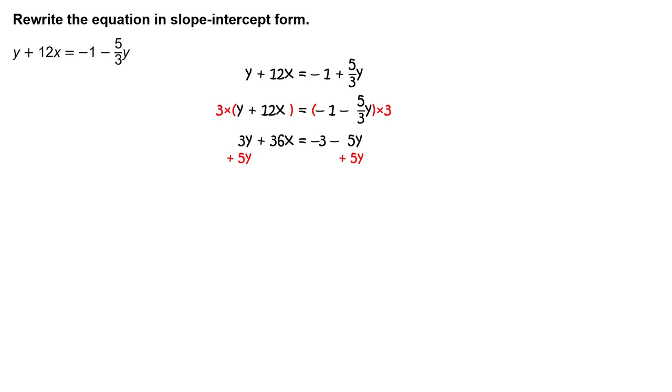Add 5y to each side of the equation. When you simplify, you get 8y plus 36x equals negative 3.